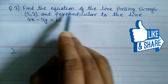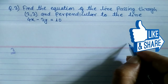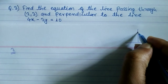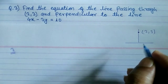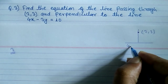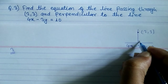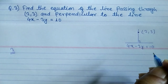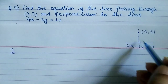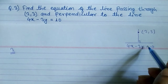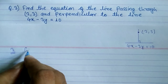Find the equation of a straight line passing through the point (2, 3) and perpendicular to the line. The equation of that line is 4x minus 3y equals 10, and this new line is perpendicular to it. When two lines are perpendicular, the product of their two slopes is equal to minus 1.